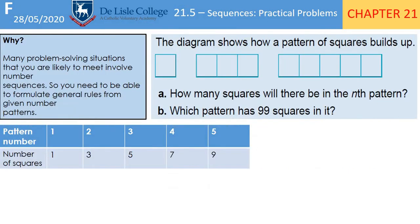We'll do this one together first. Many problem-solving situations that you're likely to meet involve number sequences, so you need to be able to formulate general rules from given number patterns. The diagram shows how a pattern of squares builds up. Part A: how many squares will be in the nth pattern — that means what's the nth term rule? And which pattern has 99 squares in it? We've got a table here: pattern number and number of squares — 1, 3, and 5.